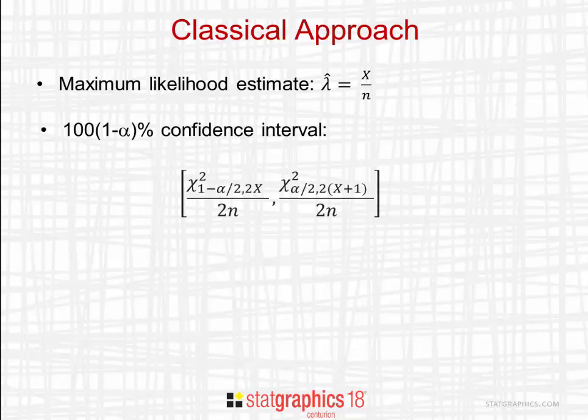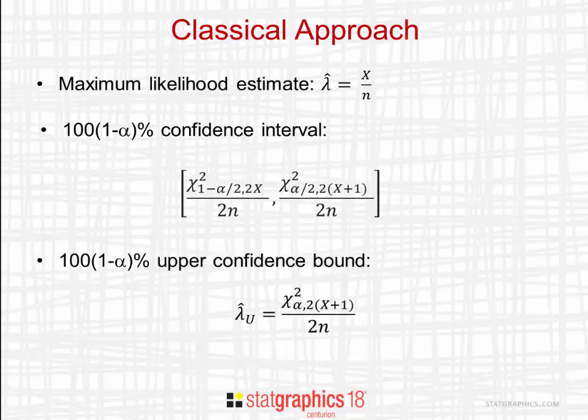In the case of the classical approach, the maximum likelihood estimate of lambda is given by X divided by n. The 100, 1 minus alpha percent confidence interval can be approximated using a chi-square distribution. We can also calculate an approximate upper confidence bound using the equation shown here.